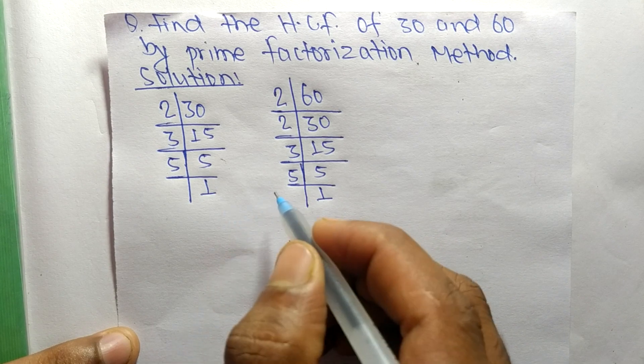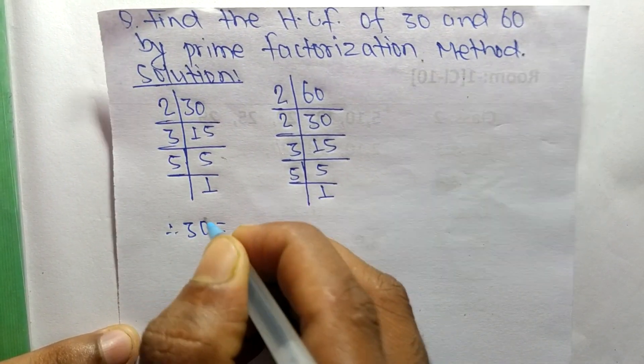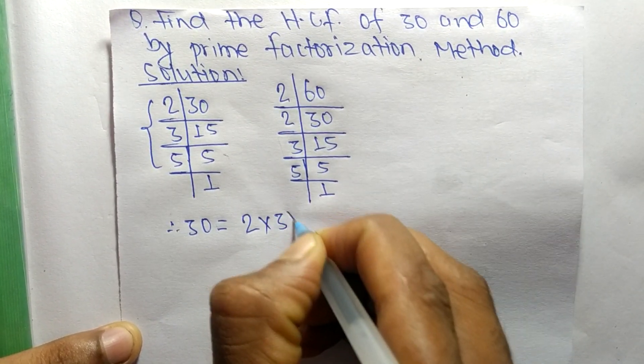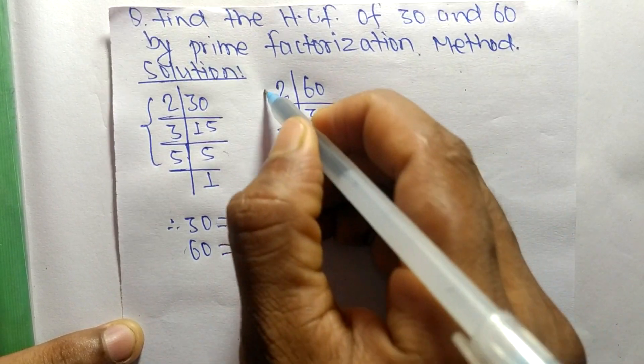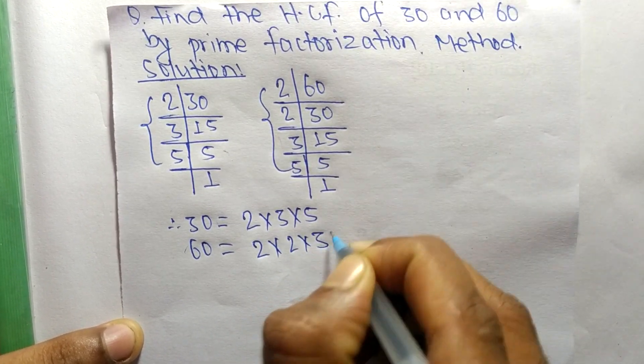So now from these prime factors we can write 30 is equal to, from this part, it is 2 times 3 times 5. Likewise, 60 is equal to, from this part, it is 2 times 2 times 3 times 5.